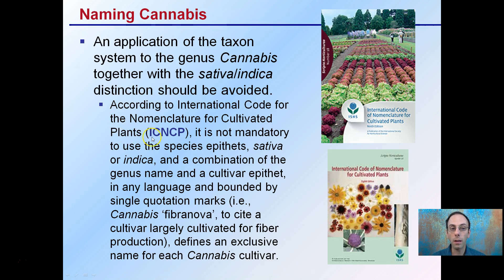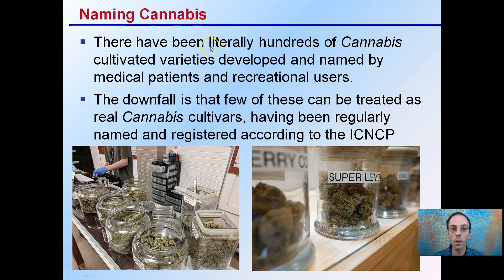The goal is to use the International Code for Nomenclature for Cultivated Plants, abbreviated the ICNCP. It is not mandatory, and uses specific epithets — such as sativa or indica — or a combination of the genus name and cultivar epithet in any language, bound by single quotation marks. For example, 'Cannabis' followed by the cultivar name in single quotation marks defines the name of that cannabis cultivar. Hundreds of cannabis cultivated varieties have been developed and named by medical patients and recreational users.